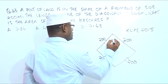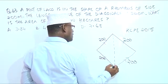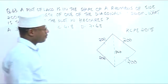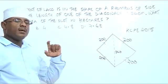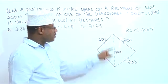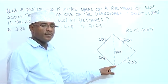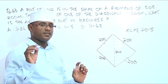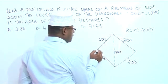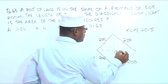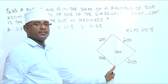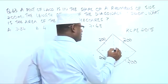So one of the diagonals has a length of 240 — this one here. Now, one thing we know about a rhombus is that all sides are equal, the opposite angles are equal, and the diagonals bisect each other at 90 degrees. So if you draw the other diagonal, it cuts the first one into two equal parts and they meet at 90 degrees.